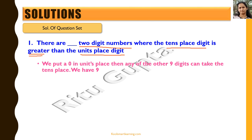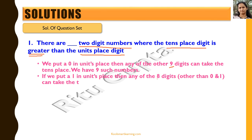We start with putting a zero in the units place, and then any of the other nine digits from one to nine can take the tens place, so we have nine such numbers. Now if we put one in the units place, we have eight digits from two to nine. We cannot have zero or one in the tens place because those would be less than the units digit, which is against what the question asks.